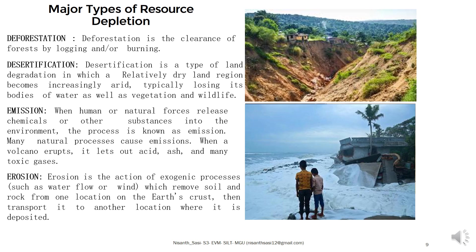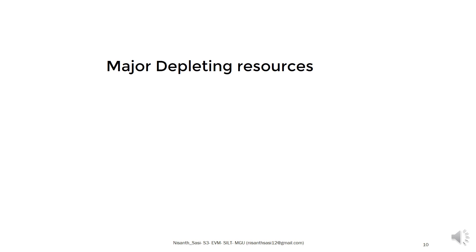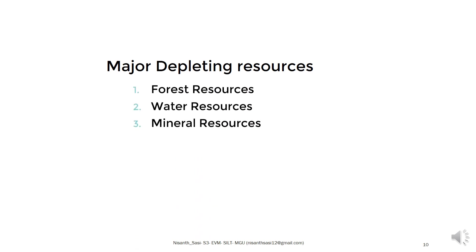We have discussed depleting and exhausted resources. The major depleting resources are: first, forest resources; second, water resources; third, mineral resources; fourth, energy resources; and finally, land resources.